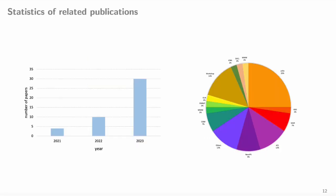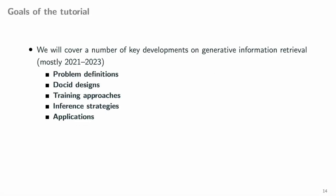Generative retrieval has attracted increasing attention from the IR community, as evidenced by the rapidly-growing number of research papers published in the conferences. In this tutorial, we will cover a number of key developments in generative information retrieval, including problem definition, doc ID designs, training approaches, inference strategies, and applications.